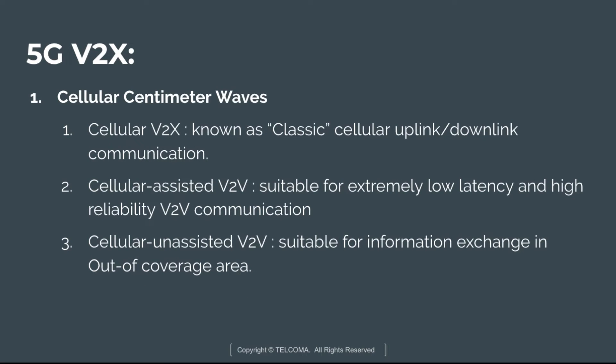In cellular V2X, also known as classic cellular uplink and downlink communication, a vehicle equipped with a UE communicates with a base station to reach either an edge server, a backend server, or to connect to another vehicle.